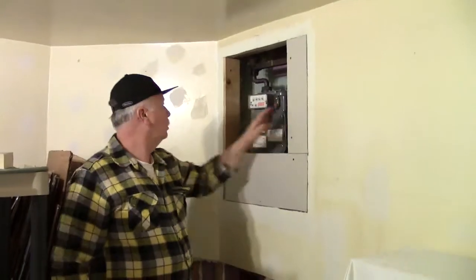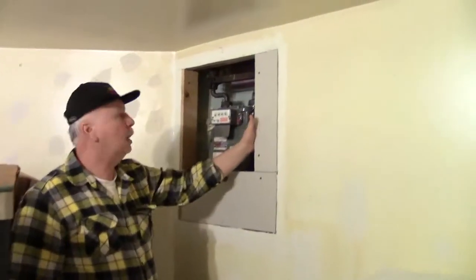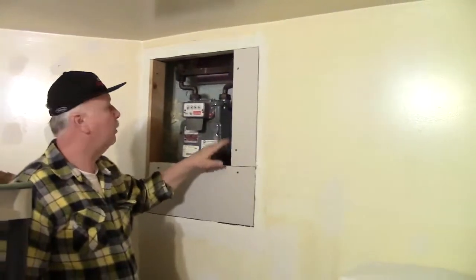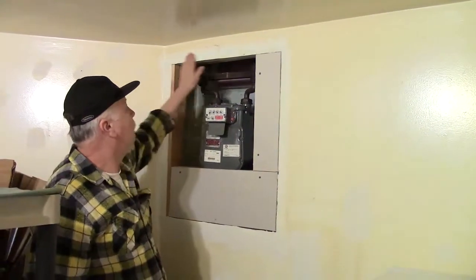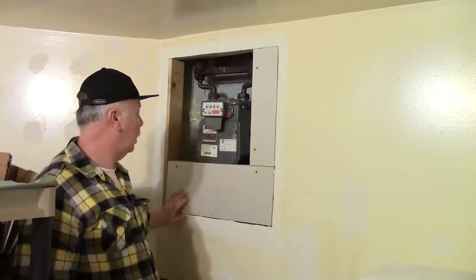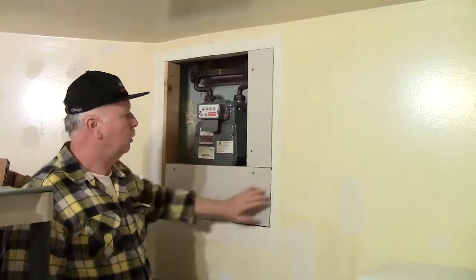We framed this hole up, made it to the exact size we need to put the inspection cover on. Now all we have to do is use the joint compound, a little bit of tape, plaster this all in, clear it all up.